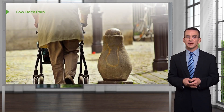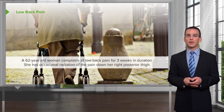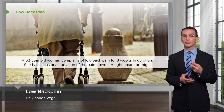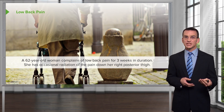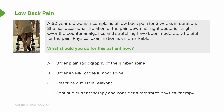Let's do another one — low back pain. A 62-year-old woman complains of low back pain for three weeks in duration, with occasional radiation of the pain down her right posterior thigh. Over-the-counter analgesics and stretching have been moderately helpful for the pain, and her physical examination is unremarkable. What should you do for this patient now? A: order plain radiography of the lumbar spine. B: order an MRI of the lumbar spine. C: prescribe a muscle relaxant. Or D: continue current therapy and consider a referral to physical therapy.